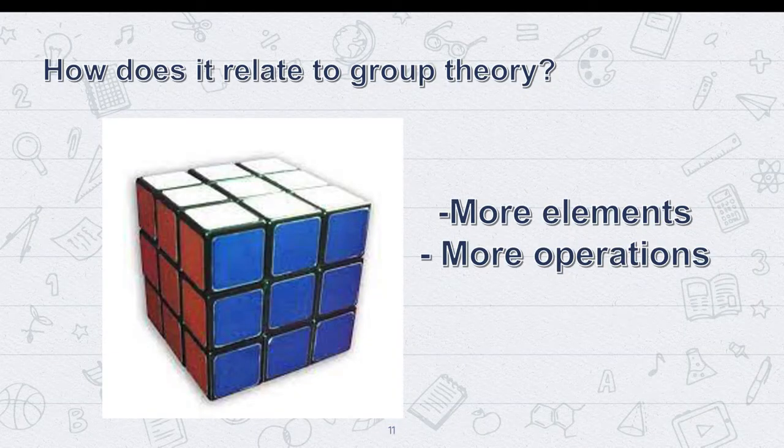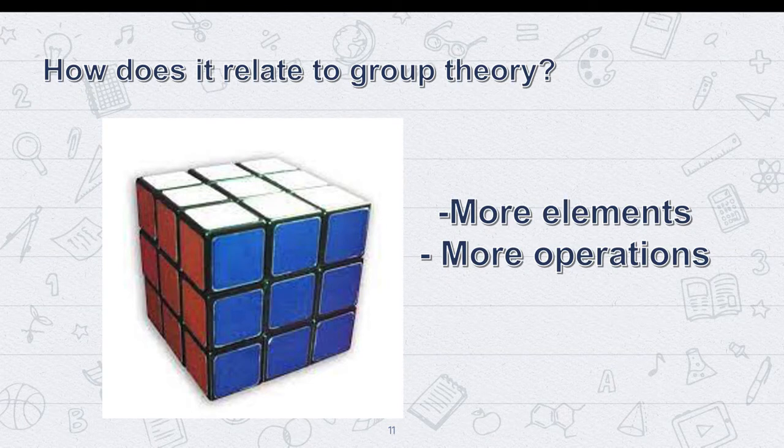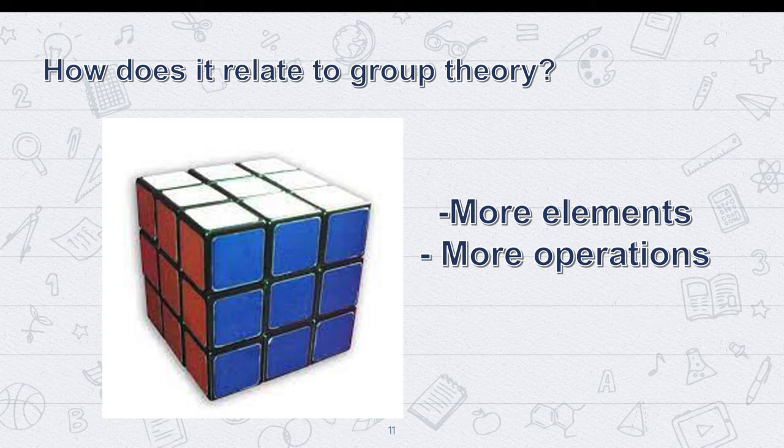Based on these properties, let's expand our square back into a full-fledged Rubik's cube. This is still a group that satisfies all of our properties. Though now with considerably more elements and more operations, we can turn each row and column of each face.